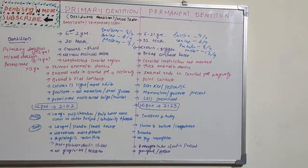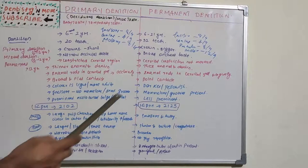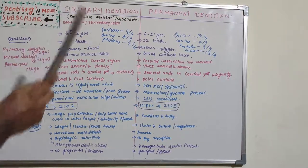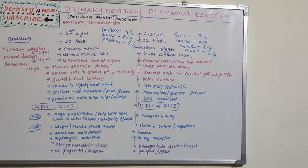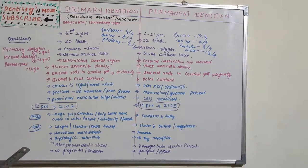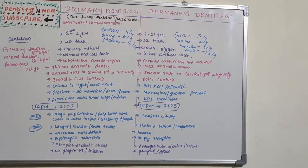Primary dentition has broader and flat contacts between teeth, whereas permanent dentition has point contacts. Regarding colour, primary dentition is more white and lighter in colour, whereas permanent dentition is darker and slightly yellowish. In primary dentition, incisors have no mamelons and no developmental grooves. In permanent dentition, mamelons and developmental grooves can be present. In primary dentition, there will be a prominent mesiobuccal bulge at the cervical region of molars, which is not prominent in permanent dentition.